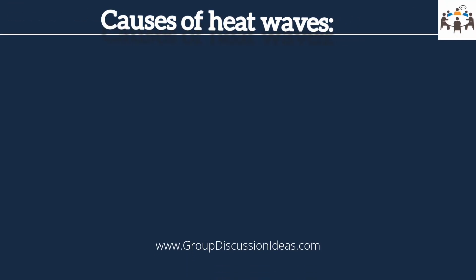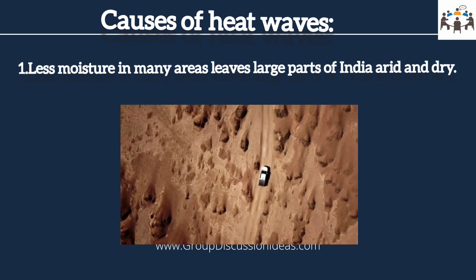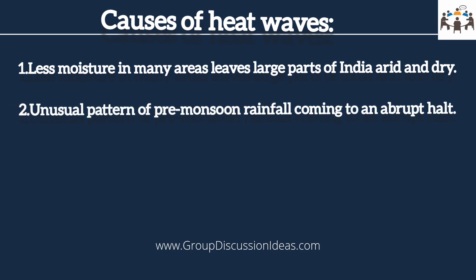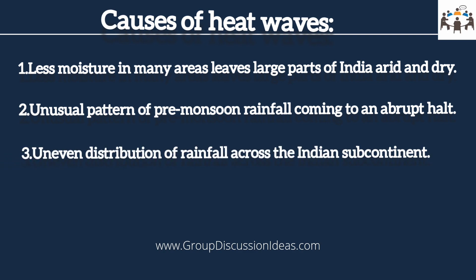Now let's talk about the causes of heat waves. Less moisture in many areas leaves large parts of India arid and dry. Heat waves in India are partly caused by the unusual pattern of pre-monsoon rainfall coming to an abrupt halt. Trade winds from South America normally blow westward towards Asia during the southwest monsoon, but the warming of the Pacific Ocean results in the weakening of these winds, limiting moisture and heat content and resulting in reduced and uneven distribution of rainfall across the Indian subcontinent.